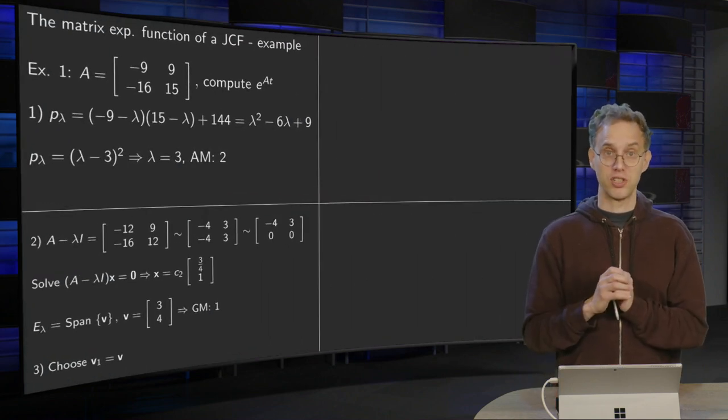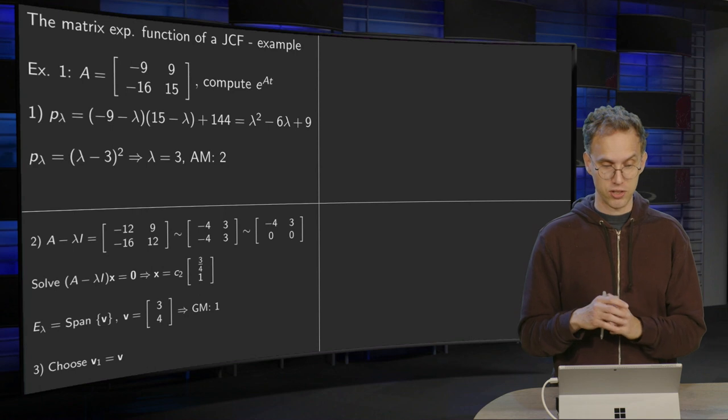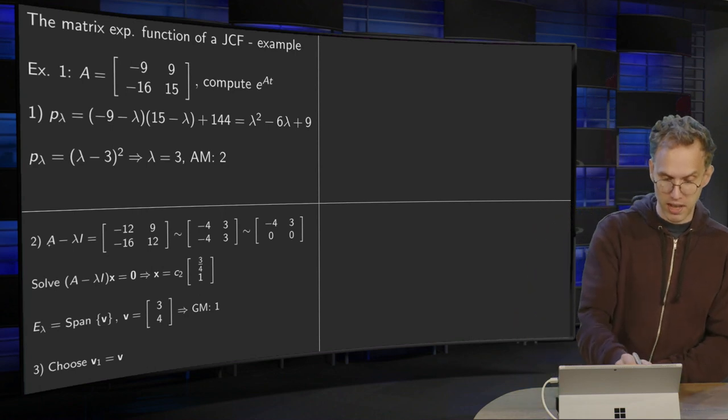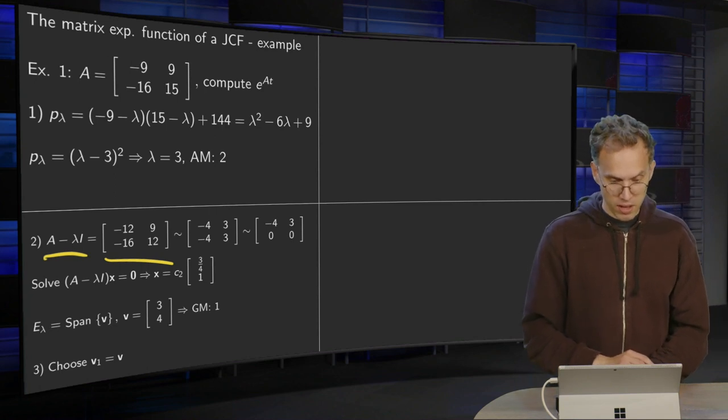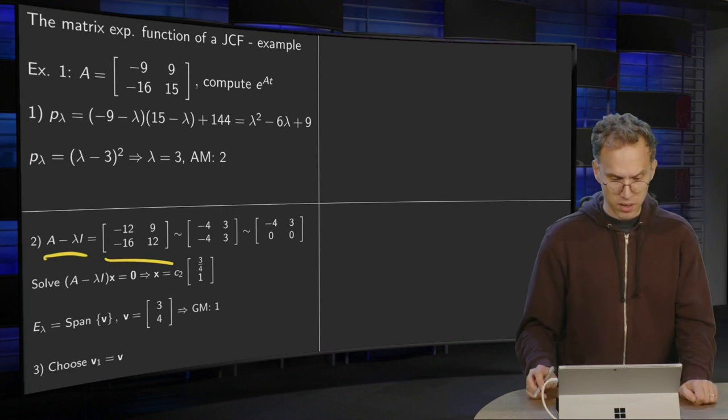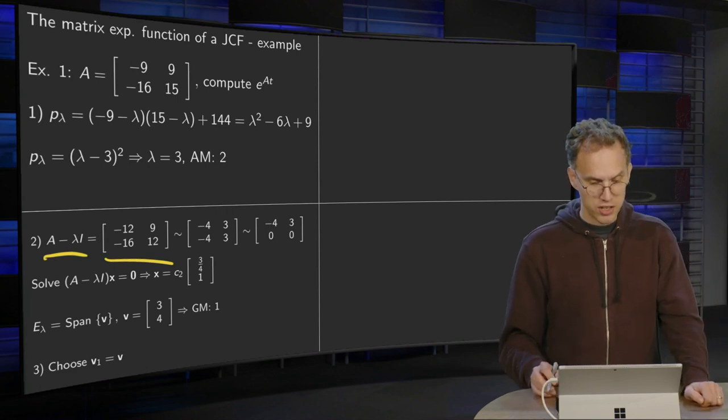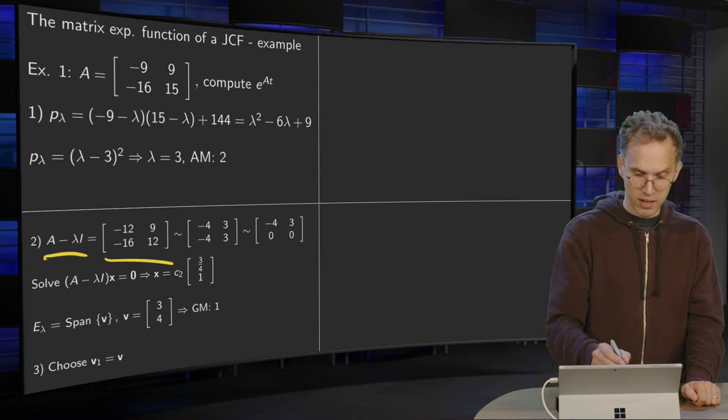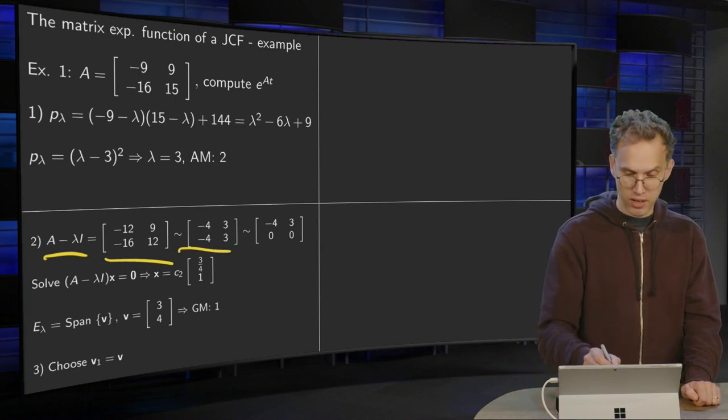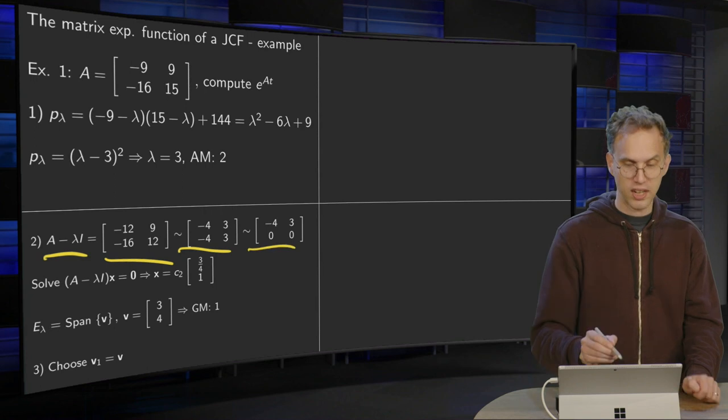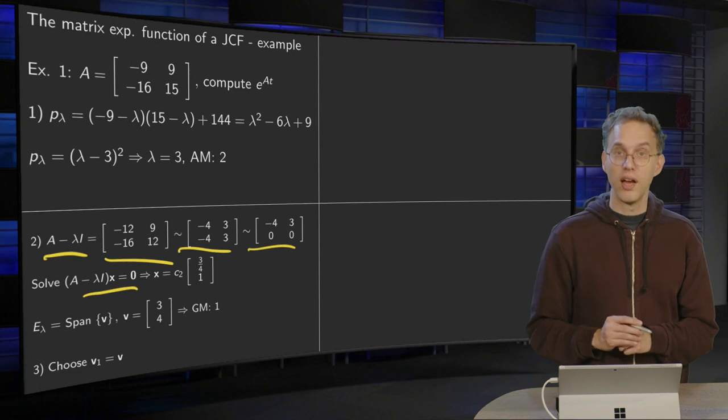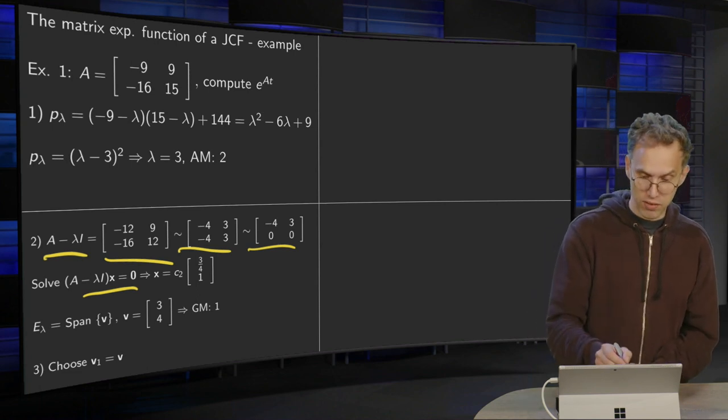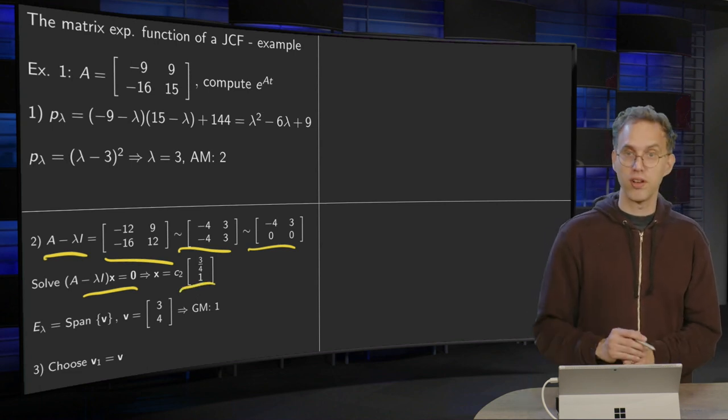Second step: eigenvectors or generalized eigenvectors. First we take a look at A minus lambda I. Get this matrix over here. You can divide the first row by 3 and the second row by 4. Then you see that you get the same rows. So you can get rid of the second row. And if you solve A minus lambda I times x equals 0, we see we get x equals some constant times 3 over 4, 1.